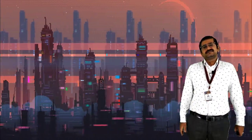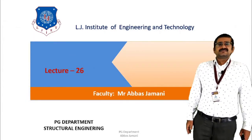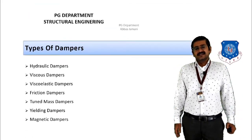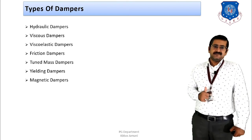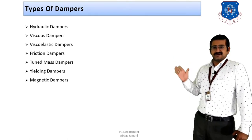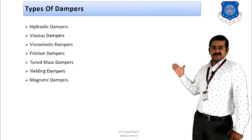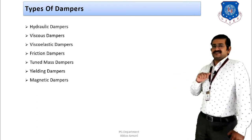The seven dampers listed are: first, the hydraulic damper; second, viscous damper; third, viscoelastic damper; fourth, friction damper; fifth, tuned mass damper; sixth, yielding damper; and seventh, the magnetic damper.